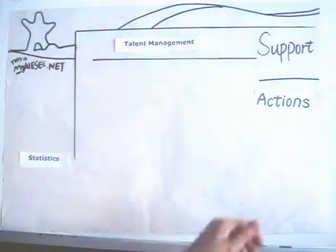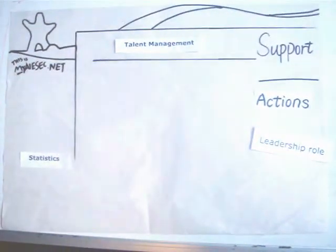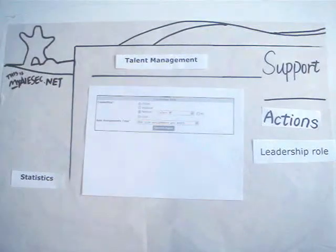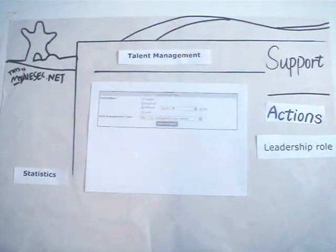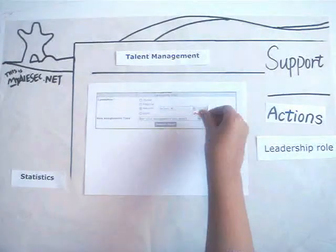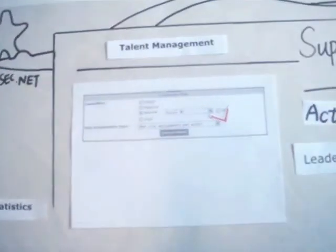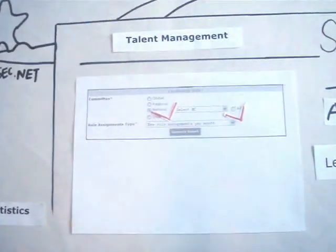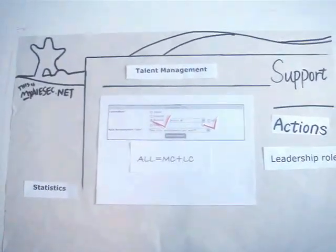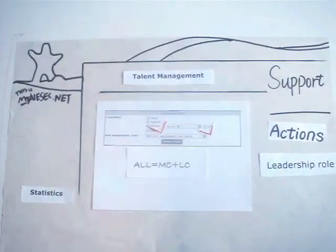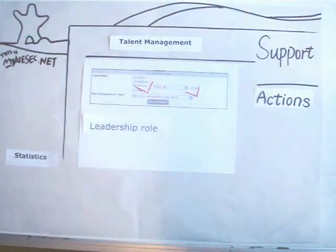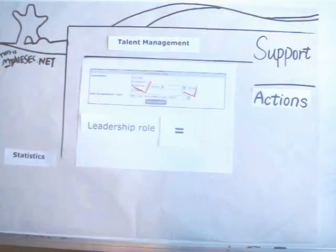Just go to Statistics, select Talent Management, and under Actions select Leadership Role to see the numbers. If you want to see the leaders not only of the committee you select but also of entities under it, click All. For example, when you tick All and select your MC, the results include leadership roles on the MC and all your LCs.